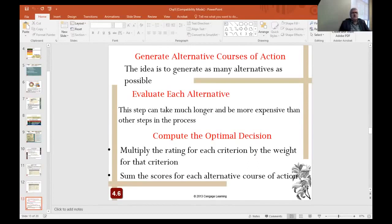In the decision-making process, managers need to generate alternative courses of action. This means that the idea is to generate as many alternatives as possible. We have to evaluate each alternative. This step can take much longer and be more expensive than other steps in the process. Then for computing the optimal decision, we multiply the rating for each criterion by the weight for that criterion. Then we sum the scores for each alternative course of action.